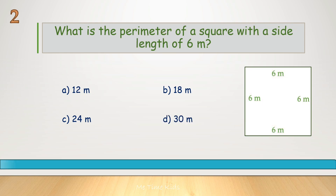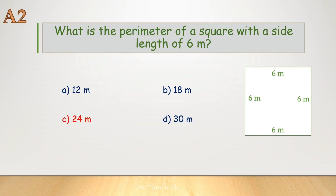What is the perimeter of a square with a side length of 6 meters? Correct answer is C, 24 meters.